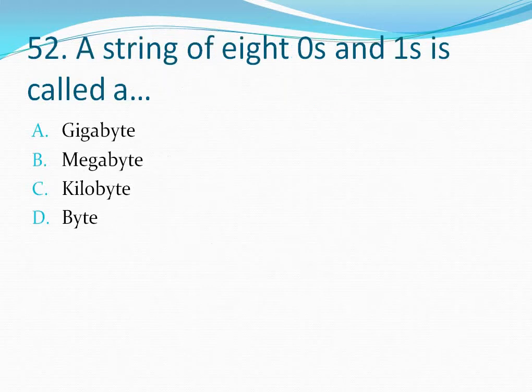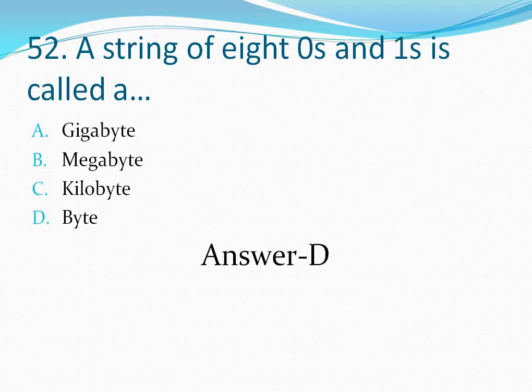Question number 52: A string of eight zeros and ones is called a — your options are: option A gigabyte, option B megabyte, option C kilobyte, option D byte. A string of eight zeros and ones is called a byte, so the correct answer is option D.